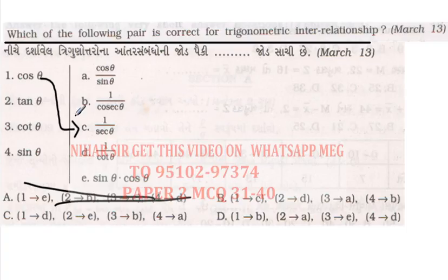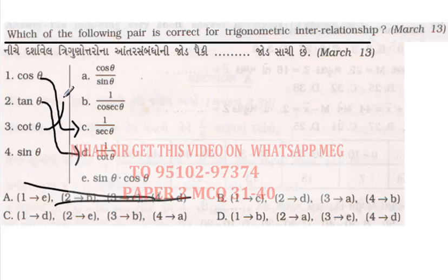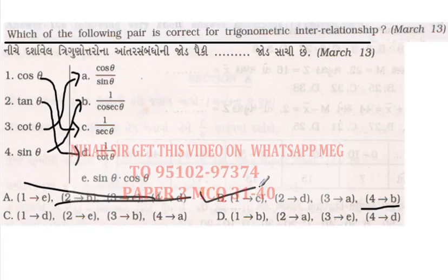Cos and sec are inverses of each other. 1 over tan equals cot. Option 2 is D: tan and cot. Option 3 is with A: cos upon sin equals cot — that I agree with. Option 4 is with B: sin and cos. This fulfills all conditions, so my correct answer is B.